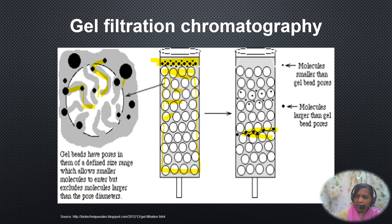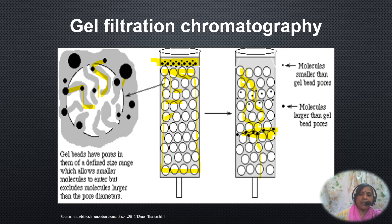The movement of larger molecules is faster compared to smaller molecules because smaller molecules enter the pores of the beads and take a longer time to elute. Larger molecules, because they cannot enter the gel or bead, come out of the column faster. This is why it is called molecular sieve chromatography and size exclusion chromatography — different size particles are excluded depending on their size.